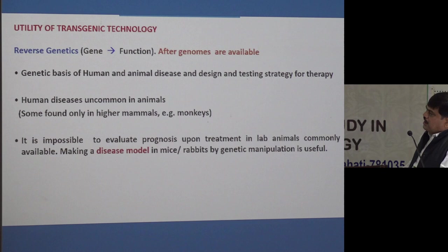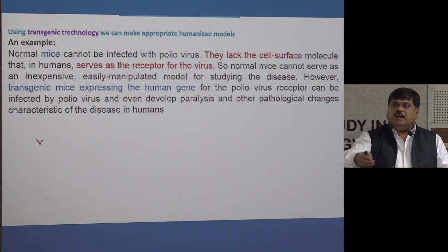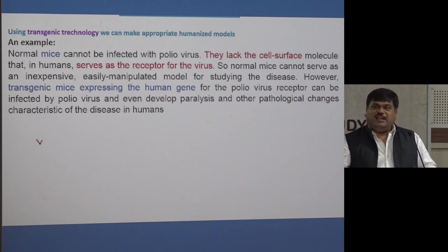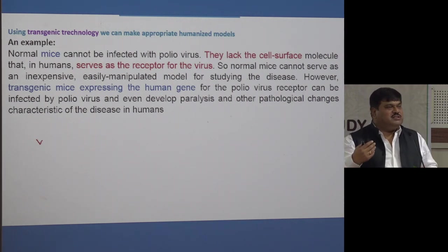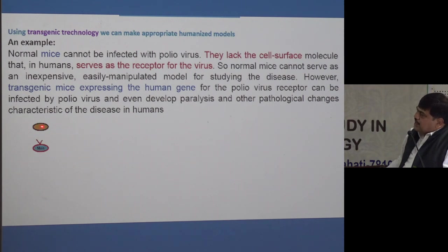It is impossible to evaluate prognosis upon treatment in commonly available lab animals. Making a disease model in mice or rabbit by genetic manipulation is useful. For example, if you inject polio virus into normal mice, they will never develop polio. In human beings, every cell has a receptor on the cell surface that can recognize and internalize the polio virus, allowing infection. But mice lack this red-colored receptor.